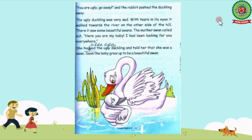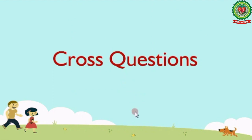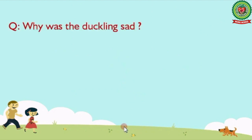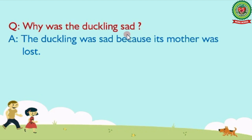Okay kids, with this we are done with our reading part. Now let's have a look at the cross questions. Our first question is: why was the duckling sad? The answer is: the duckling was sad because its mother was lost.